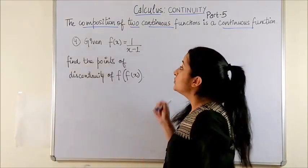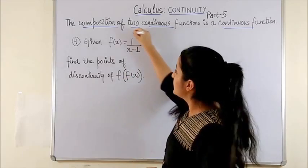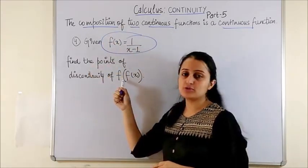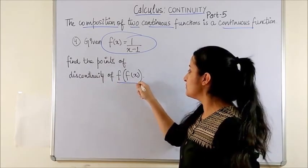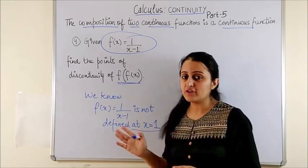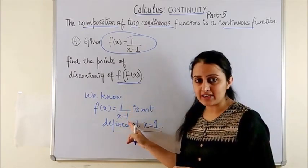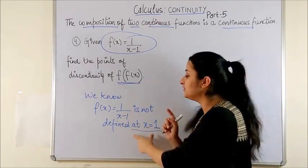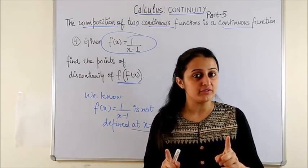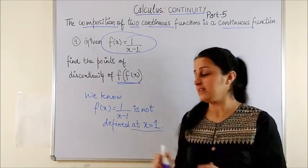For the fourth question, you are already given that fx is this function and you have to find the points of discontinuity of the composition of the function f of fx. So, first of all, fx is given by 1 upon x minus 1 which is not defined at x equal to 1. Thus, 1 becomes the point of discontinuity automatically.